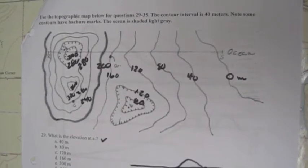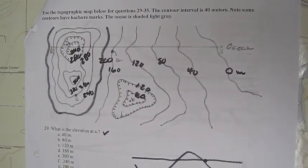Question 33 says, can a person at location D see a person at location B? So you've got to find those.